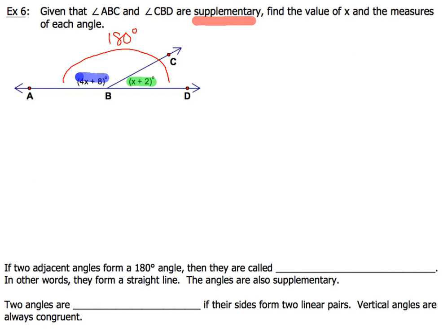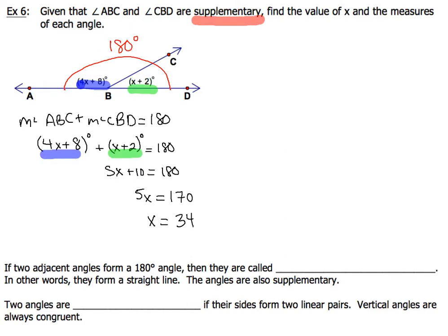Since they have a sum of 180 degrees and they're supplementary, we have to set up an equation that's going to help us find not only x, but also the measures of each angle. If you think you've got this, hit pause, set up your equation, solve for the variable, and find the measure of each angle. What we're going to do is add the measure of angle ABC and CBD, and set that equal to 180, since the two angles are supplementary.